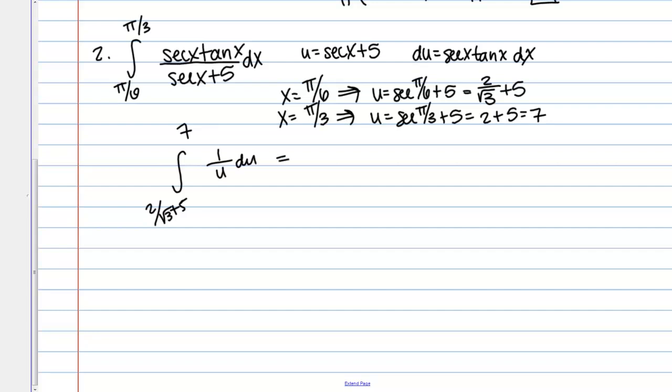Well the antiderivative of that is the natural log of the absolute value of u, and I'm evaluating it from 2 over root 3 plus 5 to 7. So then this is the natural log of 7 minus the natural log of 2 over root 3 plus 5. So notice I dropped the absolute value signs, that's just because these values are already positive.